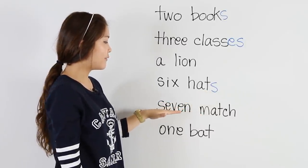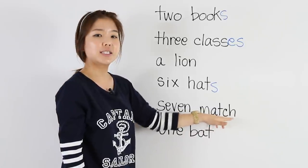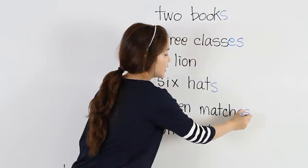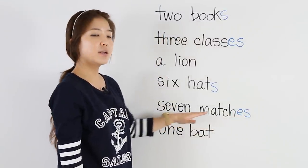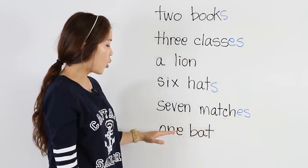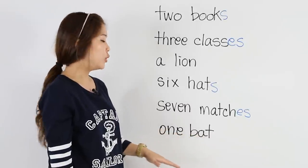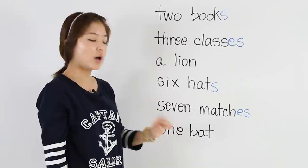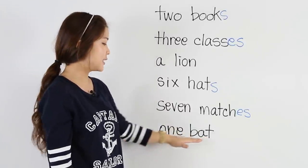The next noun is seven matches — 'match' has a CH, so we put ES: seven matches. And the last one is one bat — we do not put an S or ES because it's just one. We don't have to put anything after 'bat' — this is singular.